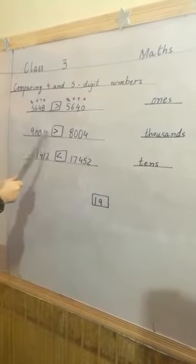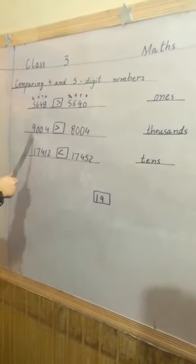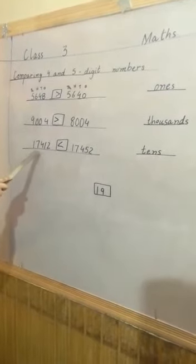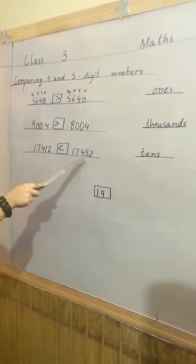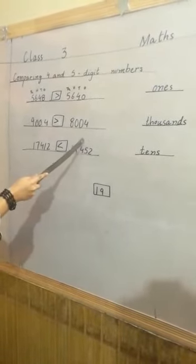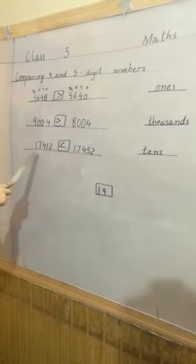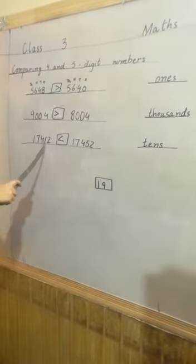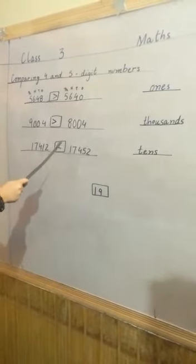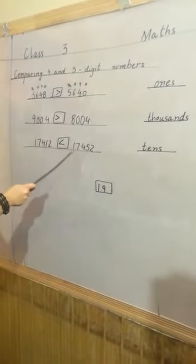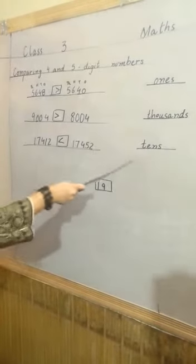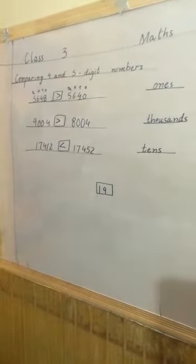Okay, we compare the thousandth place value. Next question: 1, 7, 4, 1, 2 and 1, 7, 4, 5, 2. 1 stands for ten thousand. We compare tens. 5 is the biggest number. So we open crocodile mouth on the side of 5. 1, 7, 4, 5, 2 is the greatest number. We compare tens.